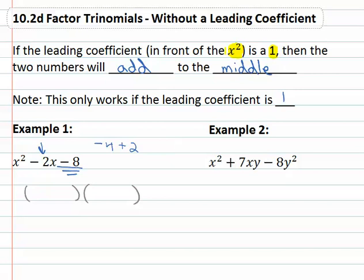So our factors are going to be x minus 4 and x plus 2. We found two numbers that multiplied to the last term and added to the middle term. And those numbers went into our factors, x minus 4, x plus 2 and that fast and quick we are done.